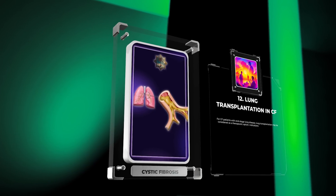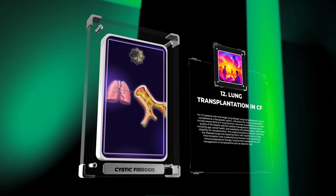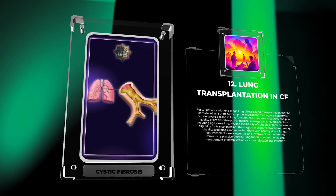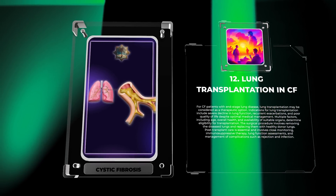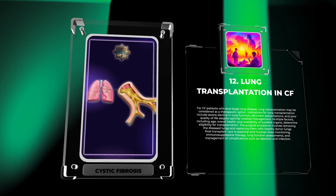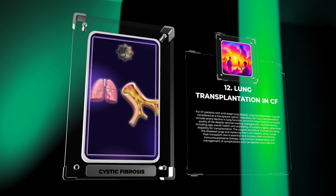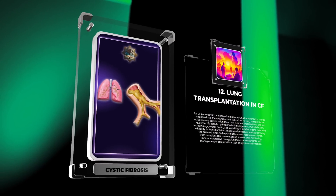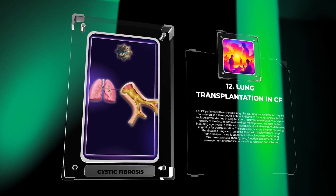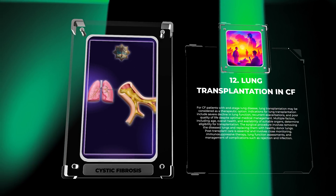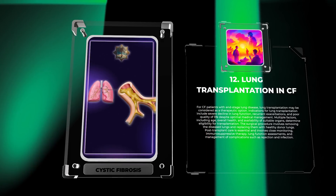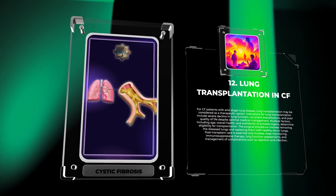For CF patients with end-stage lung disease, lung transplantation may be considered as a therapeutic option. Indications include severe decline in lung function, recurrent exacerbations, and poor quality of life despite optimal medical management. Multiple factors, including age, overall health, and availability of suitable organs, determine eligibility. The surgical procedure involves removing the diseased lungs and replacing them with healthy donor lungs. Post-transplant care is essential and involves close monitoring, immunosuppressive therapy, lung function assessments, and management of complications such as rejection and infection.